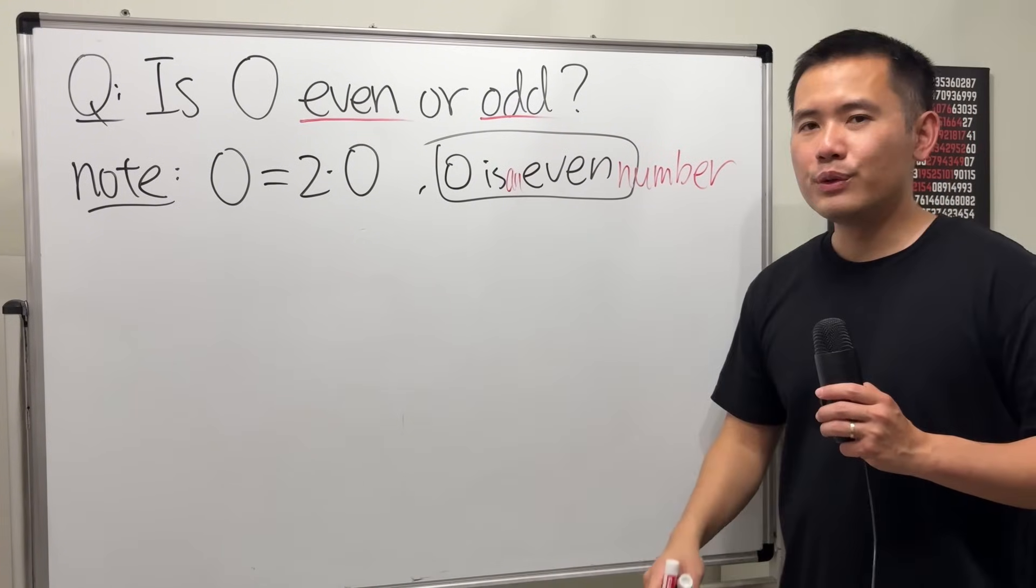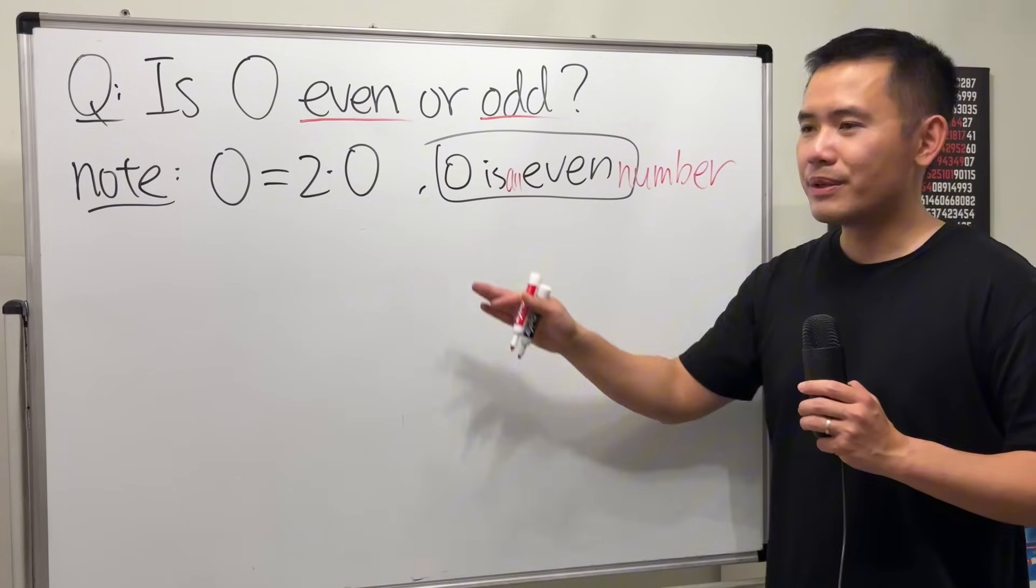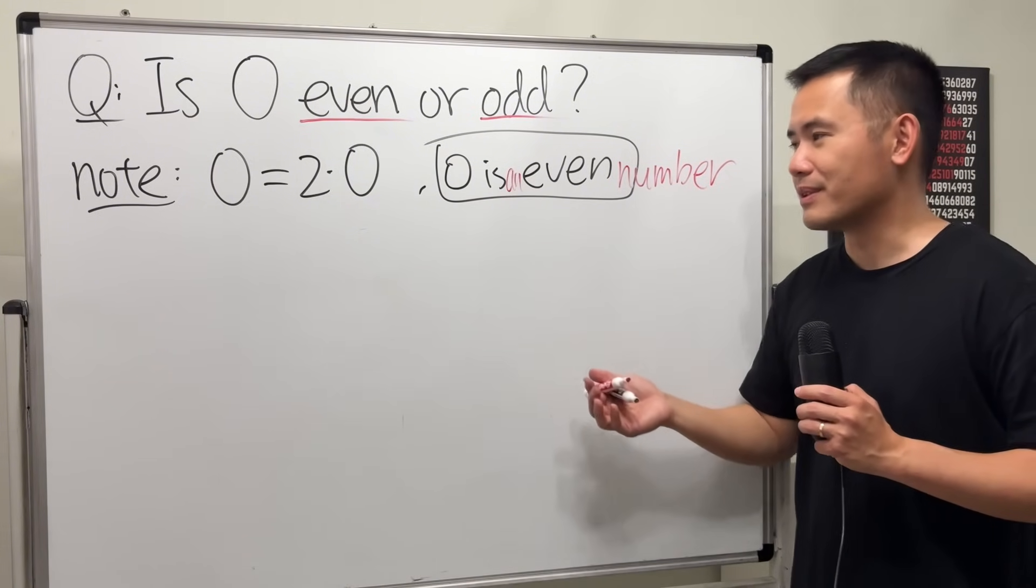By the way, you never use even or odd for decimal fractions. This is for whole numbers, right? So 0 is an even number. That's okay.